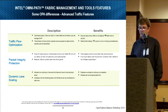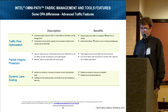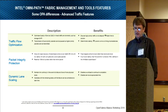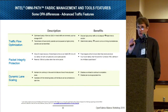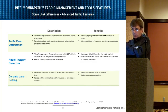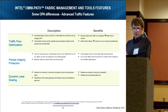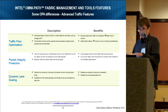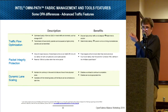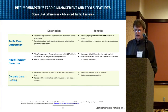The advanced traffic features fall into three general categories: traffic flow optimizations, packet integrity and protection, and dynamic lane scaling. From a traffic flow optimization perspective, we have many QoS levels. Because we are flit-based as opposed to packet-based on the link, we'll actually interrupt the transfer of larger items — say a bulk file transfer with large packets — in order for latency-sensitive small packets to go through, then the larger transfer continues right after.